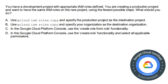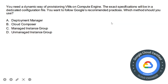Moving on to the next question. You have a development project with appropriate IAM roles defined. You are creating a production project and want to have the same IAM roles on the new project using the fewest steps possible. The options are: A) Use gcloud iam roles copy and specify the production project as the destination project; B) Use gcloud iam roles copy and specify your organization as the destination; C) Use the 'create from role' functionality in the console; D) Use the 'create role' functionality and select all applicable permissions. The correct answer is option A: use gcloud iam roles copy and specify the production project as the destination project.